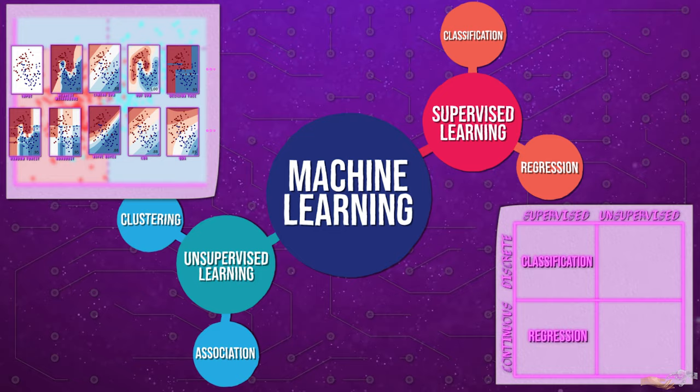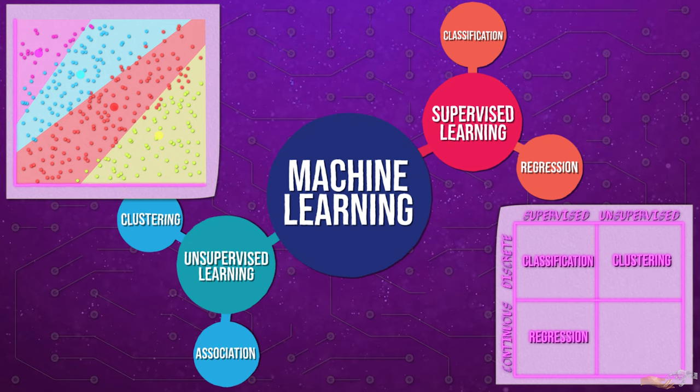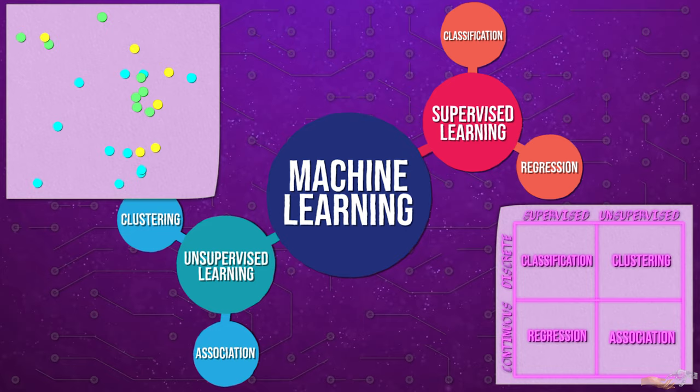Three, clustering, an unsupervised learning approach where we must discover the categories various data points lie in based on the relationships of their features. Four, association, an unsupervised learning approach where we must discover the correlations of features in a data set.